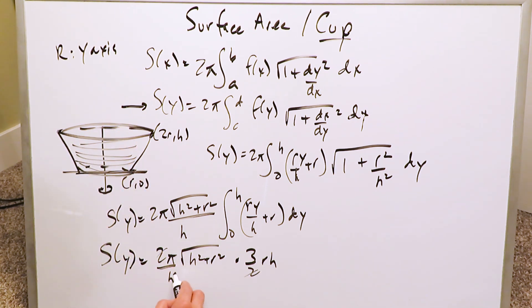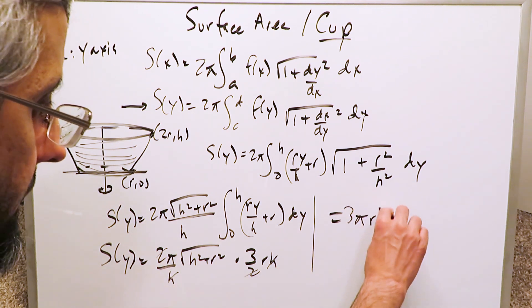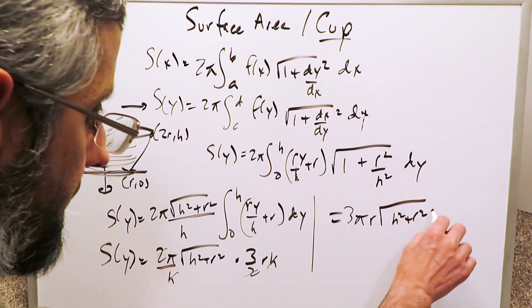The 2s cancel out, the hs cancel out. And what you end up seeing over here with regards to your end result is 3πr√(h² + r²).